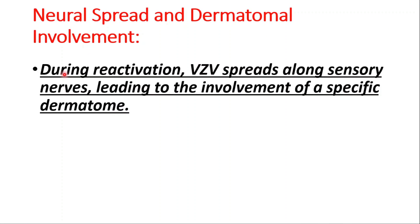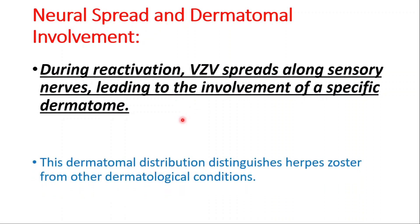During reactivation, VZV spreads along sensory nerves, leading to the involvement of a specific dermatome — this is referred to as neural spread and dermatomal involvement. This distribution distinguishes herpes zoster from other dermatological conditions.